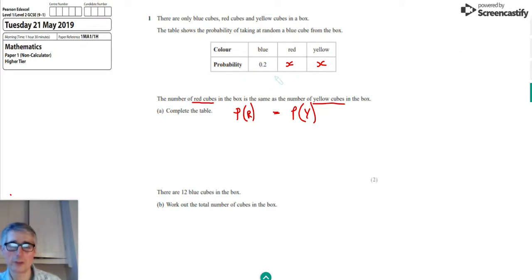And the thing we need to know is that the total probability should add up to one. So we can say that 0.2 plus, and I'm going to add them up, 2X should equal one. So we've got a little equation here, which now is going to let us work out what X is.